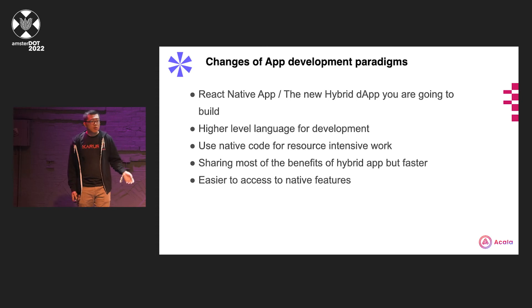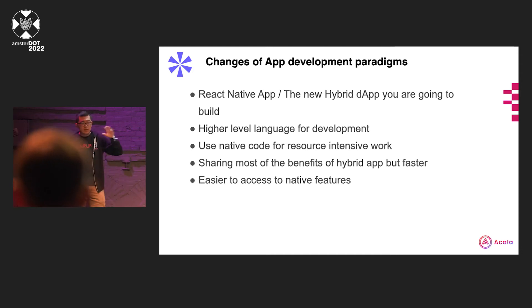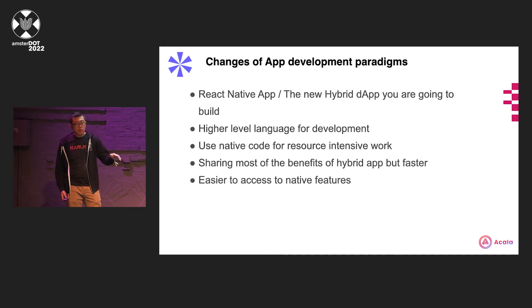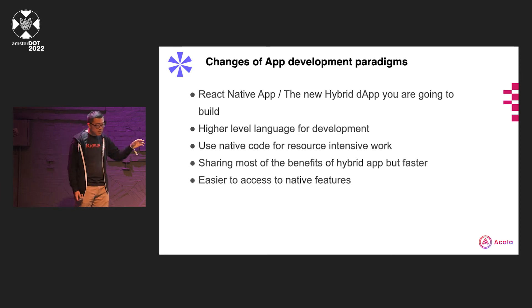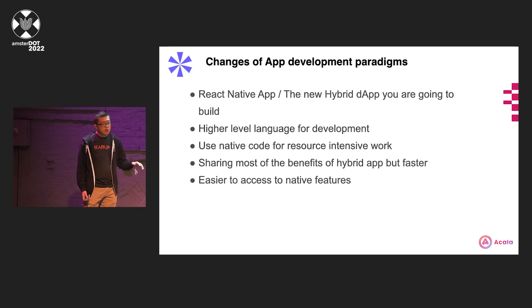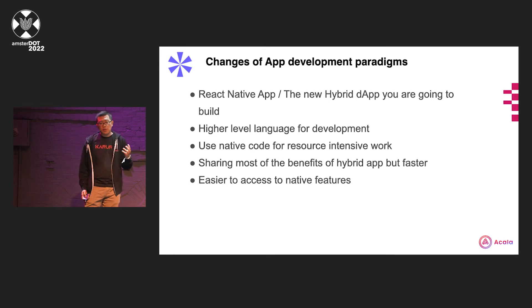A lot of apps now are building things with React Native. The idea of React Native is that you learn once and write for multiple platforms. You learn the React concepts. You don't necessarily port the existing code directly to other platforms, but the concept is there — you can easily rewrite them. Using this approach, we can still build applications using a higher-level language such as JavaScript or TypeScript, which is much easier for most developers to use. But we can easily fall back to using native code for any resource-intensive work, such as handling animation. It shows most of the benefits of hybrid apps, but can be much, much faster. It's also designed so that it's easier to access native features.